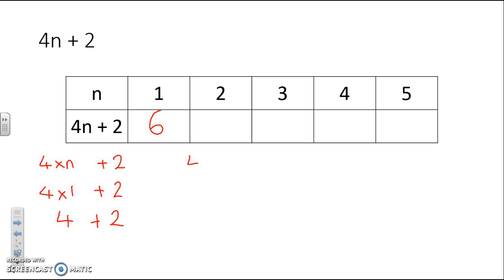For the next one we need to do 4 times 2 because now we've got n equaling 2, and then add 2. So our answer is 10. For the next one we need to do 4 times 3 plus 2, which is 14. 4 times 4 is 16. Add 2 is 18. And finally, 4 times 5 is 20, plus 2 is 22.